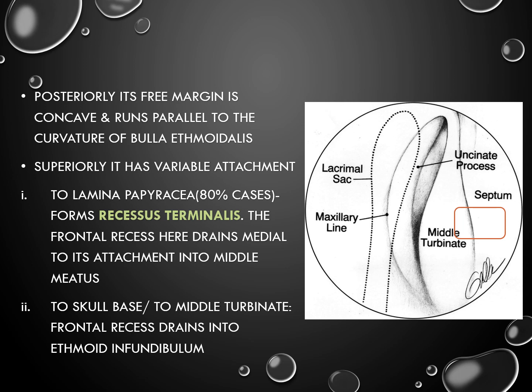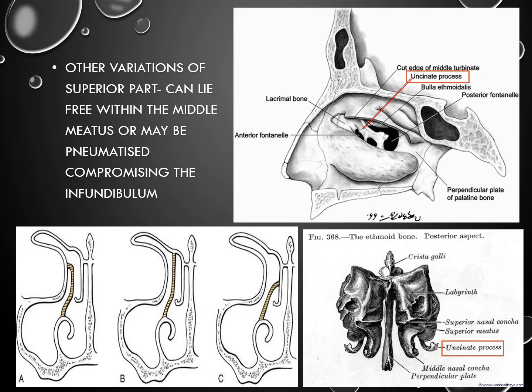Otherwise, it can be attached to the skull base or to the middle turbinate, in which case the frontal recess drains into the ethmoid infundibulum. This is the picture showing the first case scenario where the uncinate process is attached to the lamina papyracea, which is seen in 80% of cases. Here, the frontal recess drains into the middle meatus directly, forming the recessus terminalis.